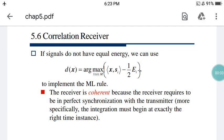Today's topic is the correlation receiver. This receiver basically depends upon the correlation function to receive signals. If signals do not have equal energy, we can use the decision rule: d(x) = arg max of the inner product <s_i, x> minus half E_i. This is used to implement the ML rule.